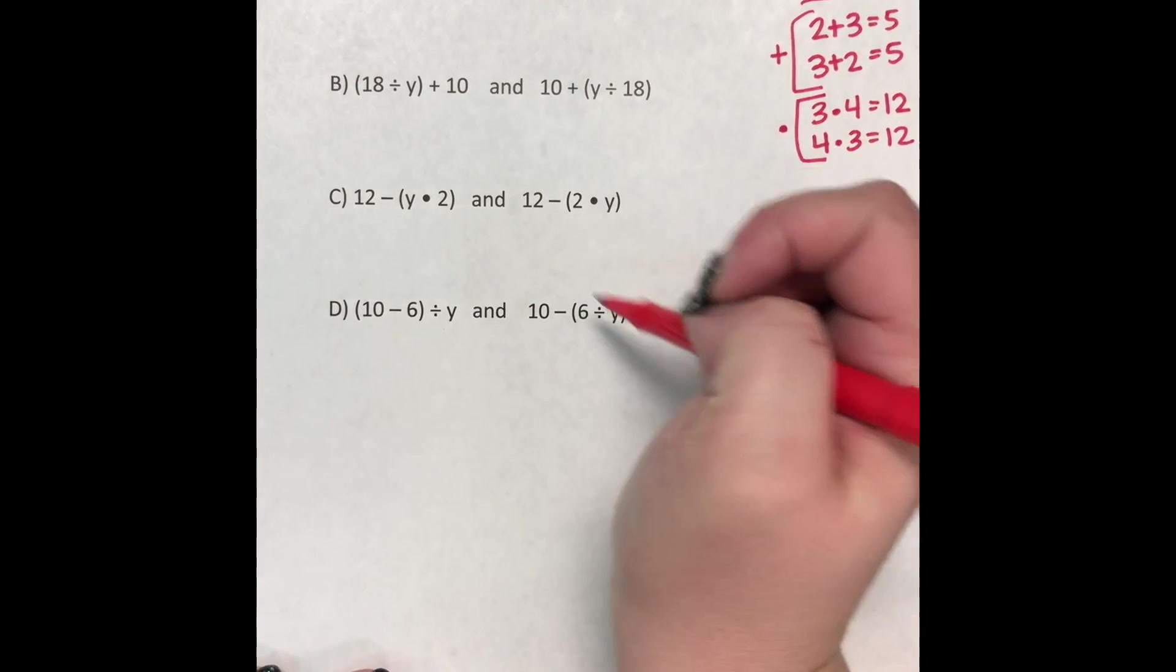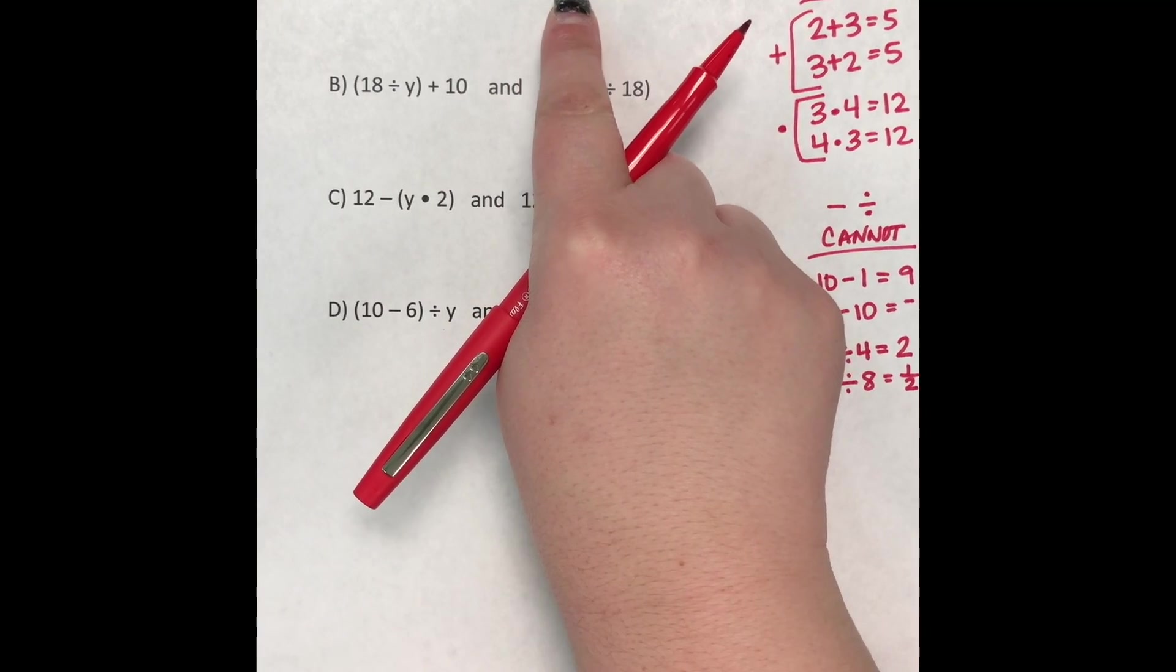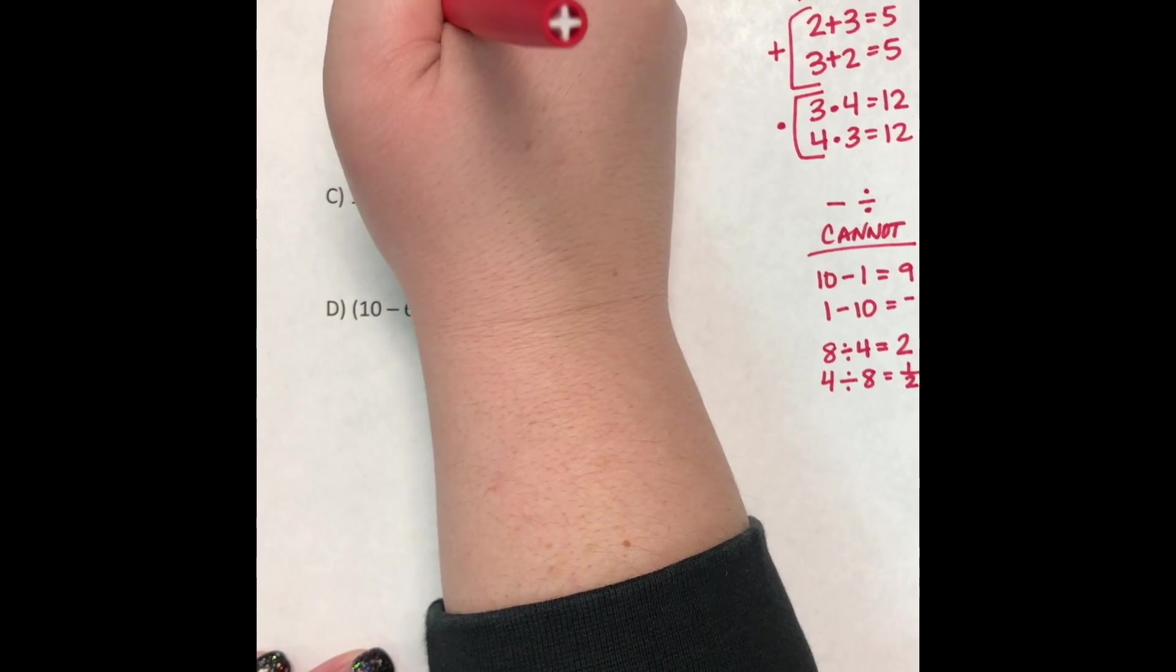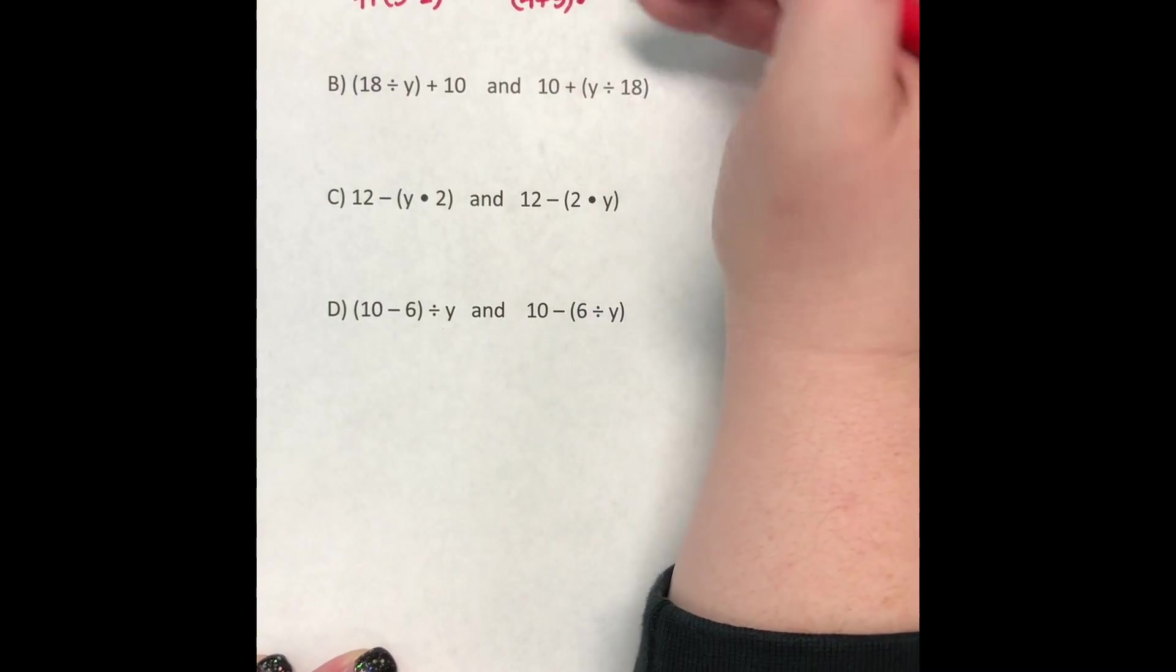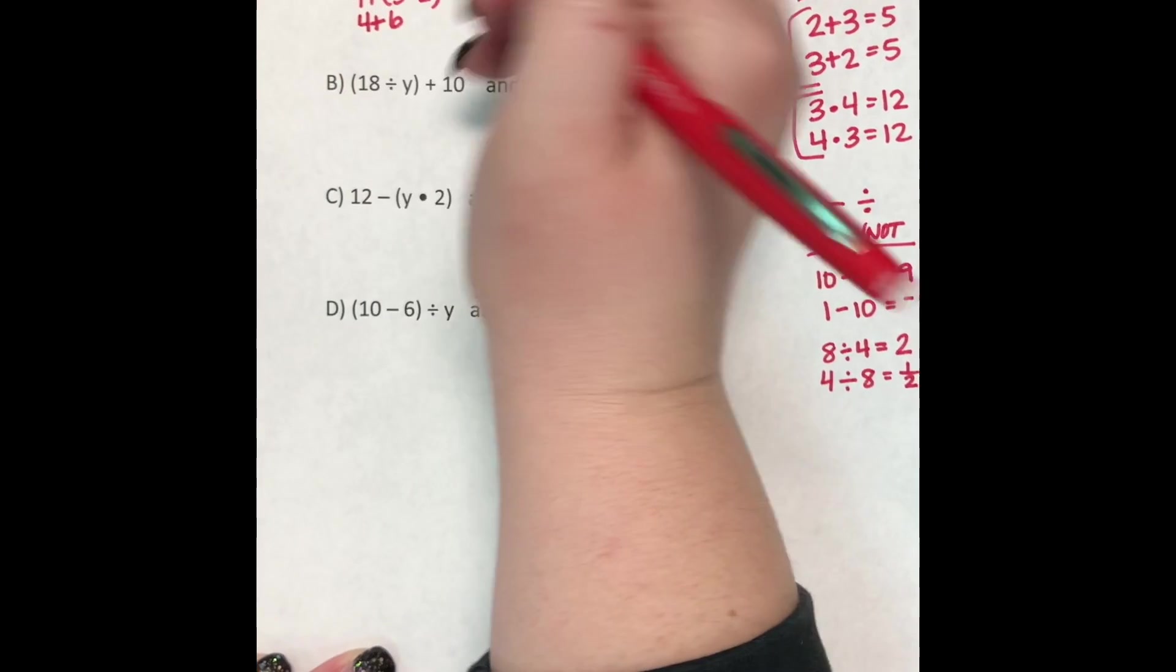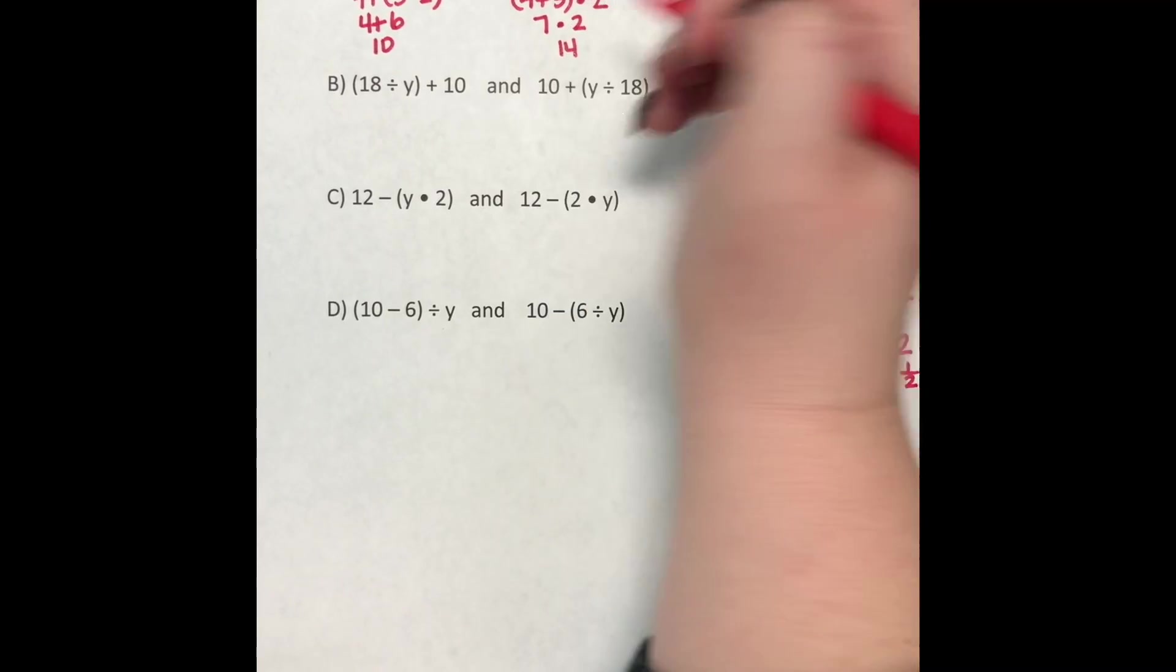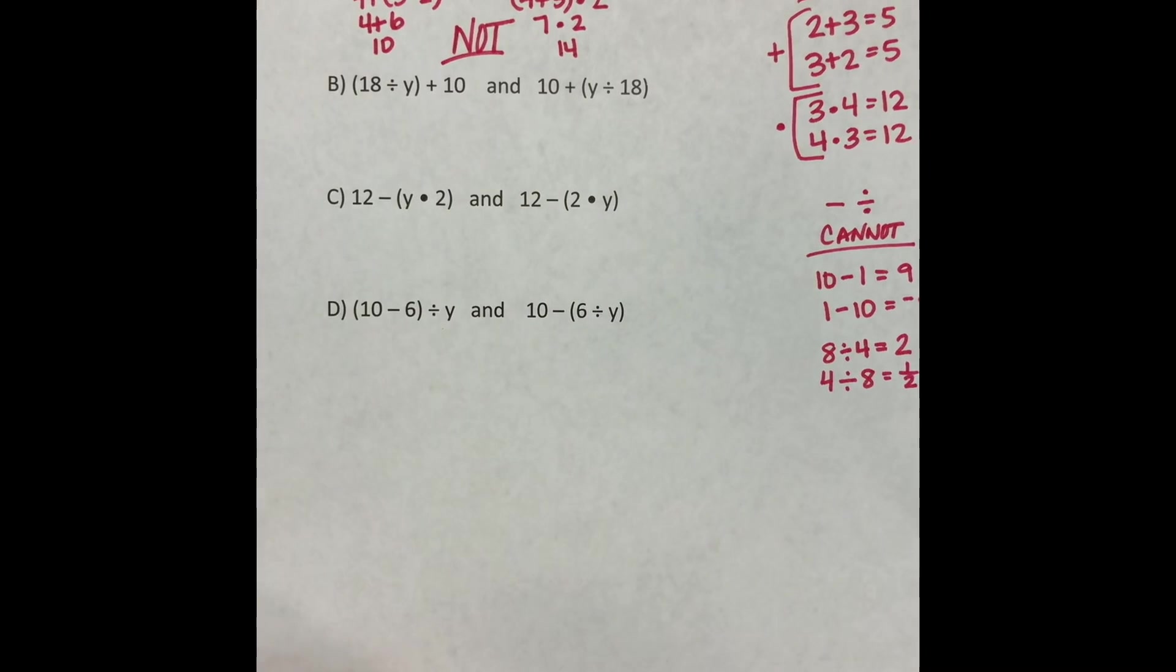So looking at our answer choices, letter A, we have 4 plus parentheses 3 times Y, and then we have parentheses 4 plus 3, close parentheses, times Y. So kind of two things, but we still have adding and multiplying, adding and multiplying. So we're going to plug in 2. So I'm going to rewrite my whole problem, but instead of that variable Y, I'm going to write the number 2. And we're hoping that these come out equal or equivalent. So order of operations says, parentheses first, so 3 times 2 is 6, and 6 plus 4 is 10. So we're hoping that this side comes out 10 as well. So on this side, parentheses first, 4 plus 3 is 7, and 7 times 2 is 14. So these are not equivalent. They are not equal. So A is not a good answer.